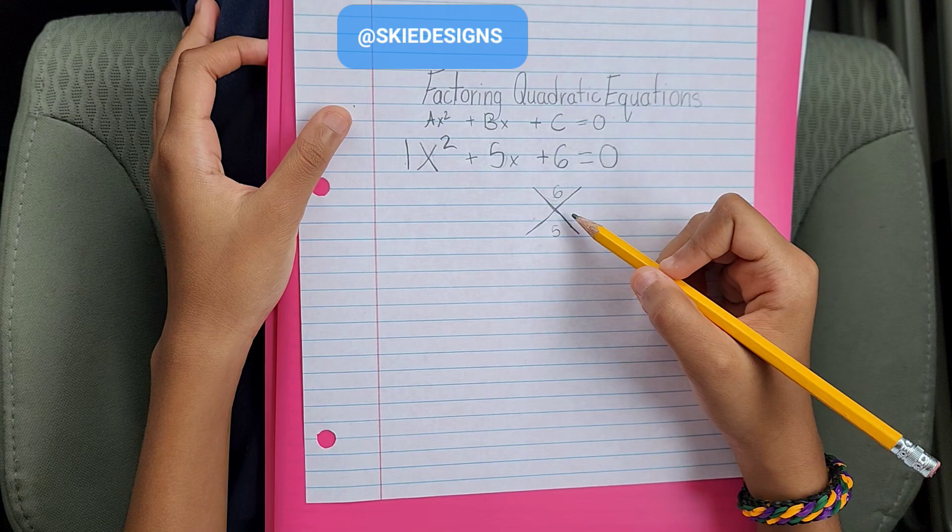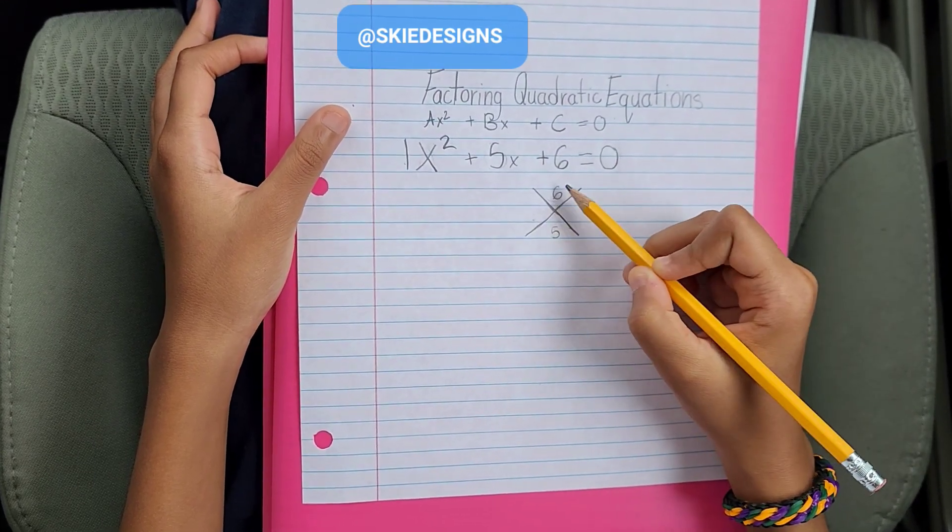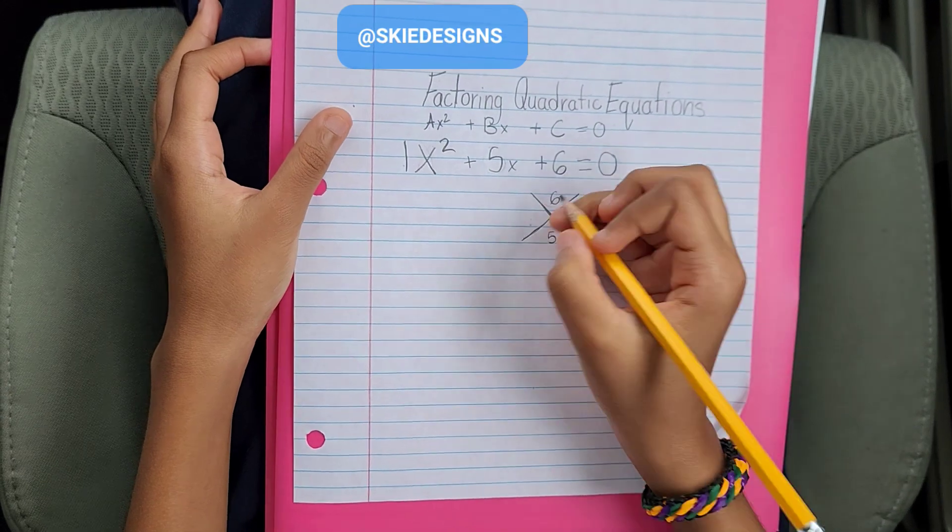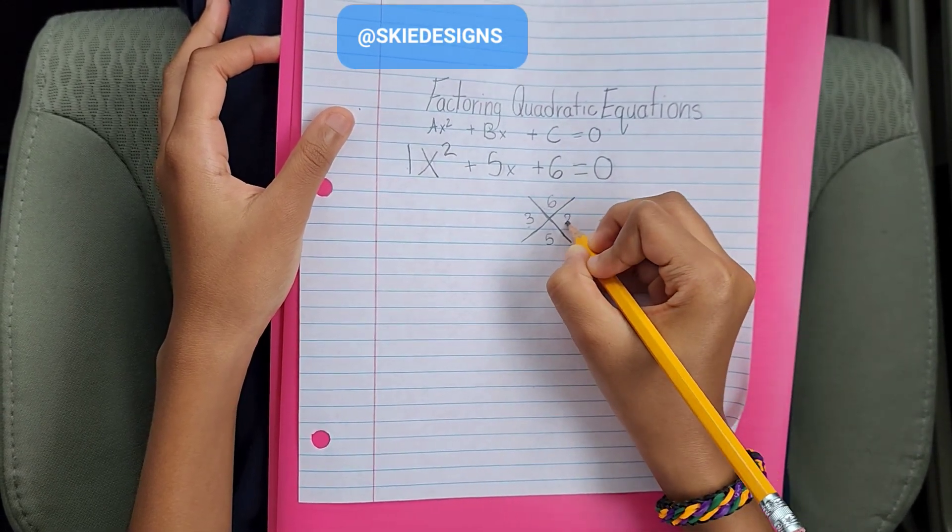What could that be? Oh wait, 3 and 2. 3 times 2 gives you 6, and 3 plus 2 gives you 5. Alright, so it doesn't matter what side you put it on, but we're going to do it like this.